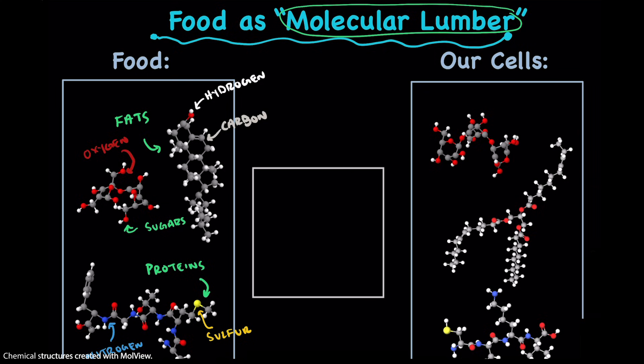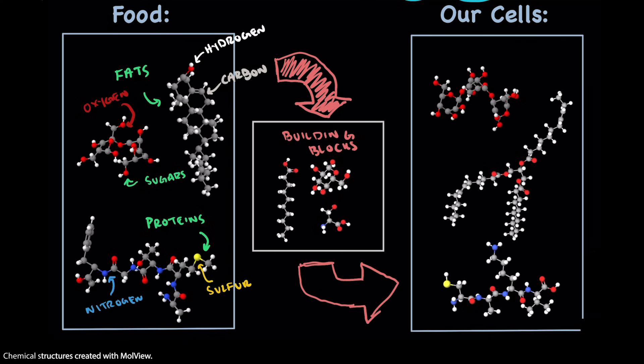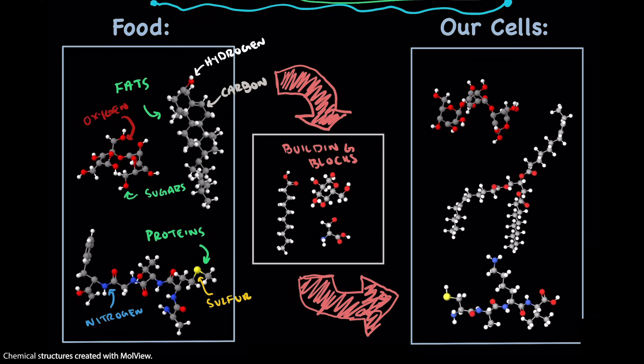Our cells can take food and break it down into small building blocks, and then use those building blocks in order to build new structures in our body. So this is how we grow. This is how babies become adults. Turns out we actually are what we eat. It's pretty amazing.